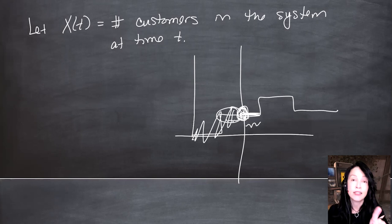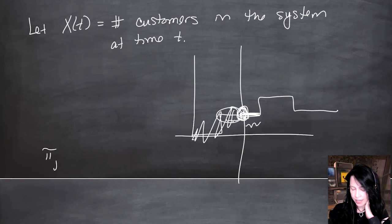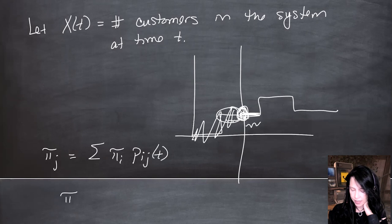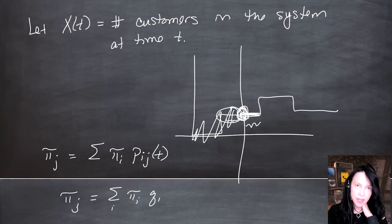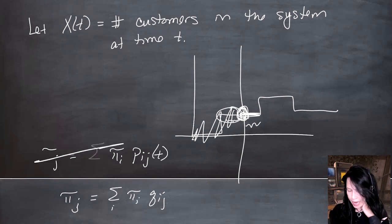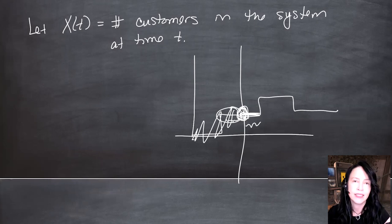However, X(T) is still a stochastic process and it does still have a stationary distribution. That stationary distribution does not satisfy the pi-Q equation, because those were developed specifically for Markov processes. But we have the PASTA property, which applies to any stochastic process where external arrivals are driven by a Poisson process — PASTA was not only for Markov chains.